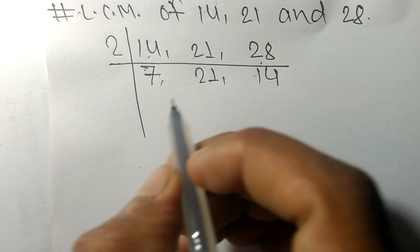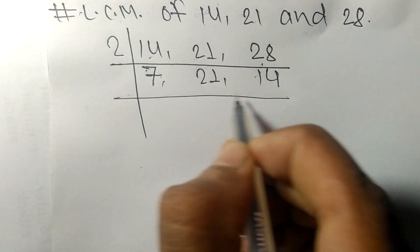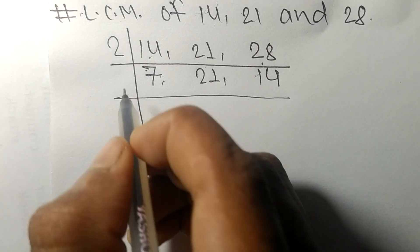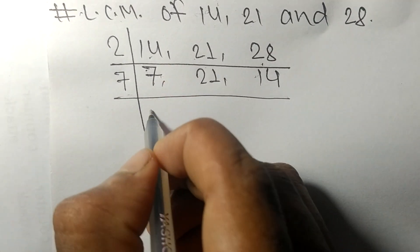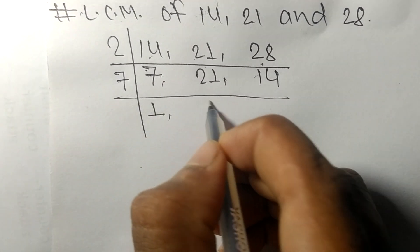Now these all numbers are divisible by 7. 7 times 1 equals 7, 7 times 3 equals 21, 7 times 2 equals 14.